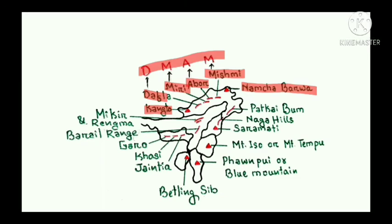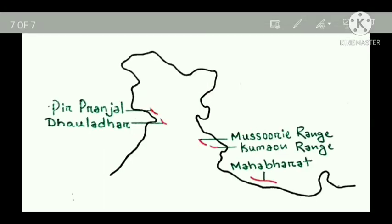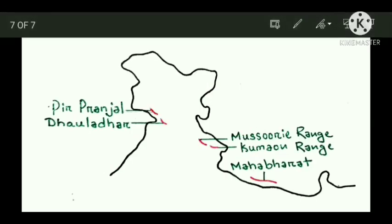Moving on to the Lesser Himalayas or Himachal, the altitude of this range lies between 1000 and 4500 meters, and the average width is 50 kilometers. These are some important ranges found in the Lesser Himalayas.